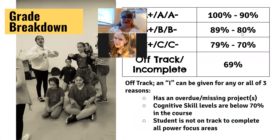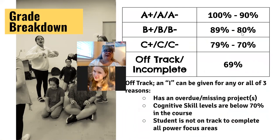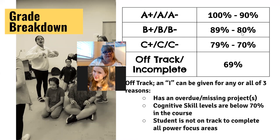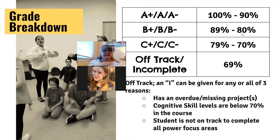Finally, our A, B, and C grades are pretty traditional: 100 to 90 is an A, 89 to 80 is a B, 79 to 70 is a C, where a 70 — a C minus — is our lowest grade. Everything below that becomes an off track or an incomplete. You can get an off track for three reasons: number one, you have an overdue or missing project that's red because you haven't turned it in. Number two, your cognitive skills are below 70 — you may have finished a project, but when you turned it in, it wasn't up to the standard for mastery, so it's being sent back to resubmit until you reach that mastery level. And finally, if you are behind in a focus area — like Katherine's red focus area in economics — it shows off track now, but tomorrow she can take that focus area, and if she passes, she will be on track and that red and off track message will go away.